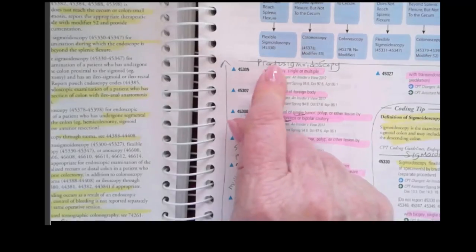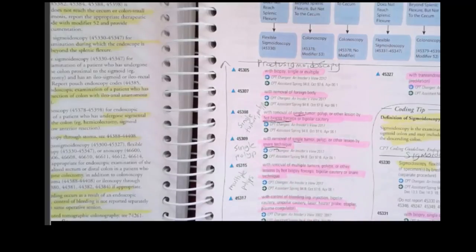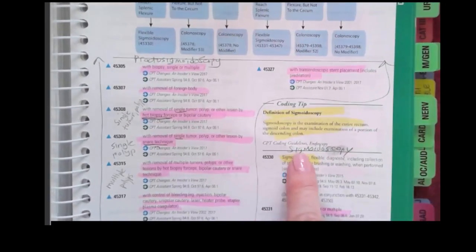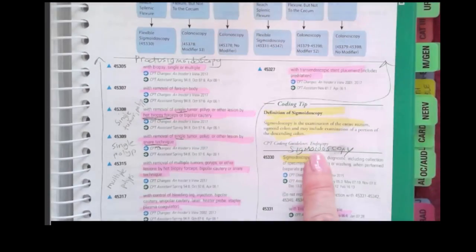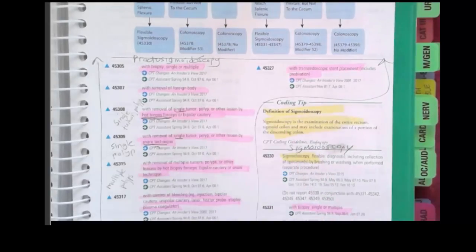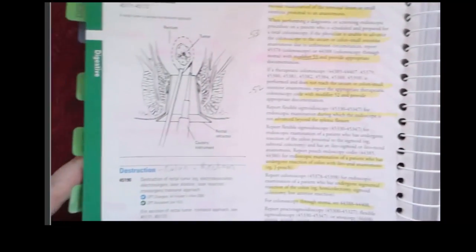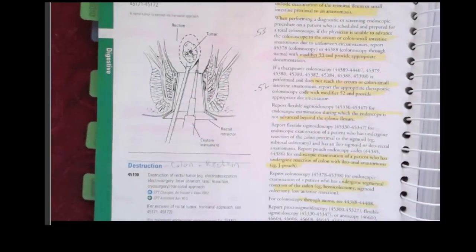I also make a distinction — these codes are proctosigmoidoscopy. Then over here, when I get to this column, I'm starting the sigmoidoscopy and I've highlighted the definition. I just wanted to show you a little bit more about not being afraid to write in that book.